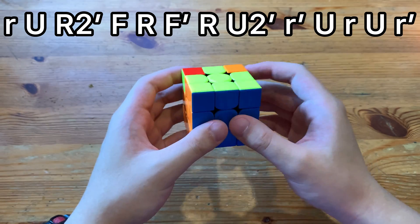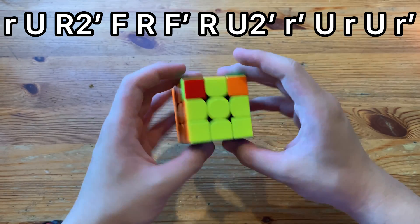One last time, from this angle, twisty PLL, there's a J perm, this corner orientation.